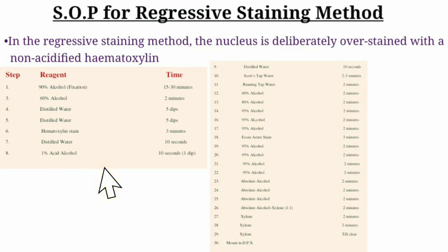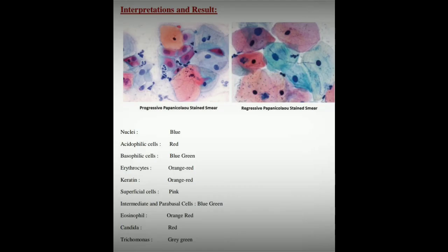Regressive staining method steps: distilled water 10 seconds, tap water 2–5 minutes, running tap water 2 minutes, then 60%, 80%, and 95% alcohol (2 min each), Eosin Azure stain 3 min, 95% alcohol 4 times (2 min each), absolute alcohol 3 times (2 min each), absolute alcohol-xylene 1:1 for 2 min, xylene 3 times. Last step: mount with DPX.